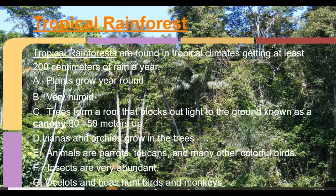The tropical rainforest is very much endangered in the world today. It gets at least 200 centimeters of rain — that's over six feet of rain a year. It's very warm because it's located near the tropics. By far the most diverse of all biomes. You have many types of plants and trees, including some plants that never touch the ground and just live in the canopy.